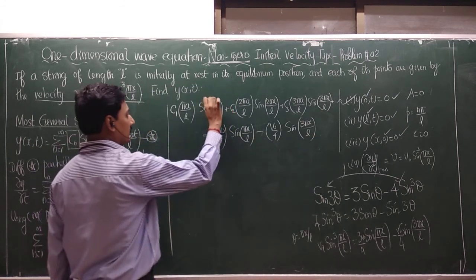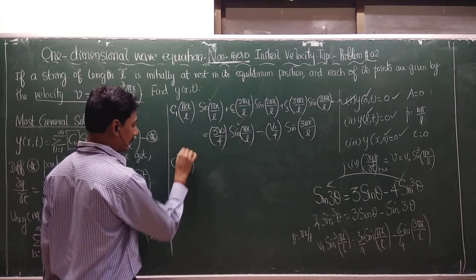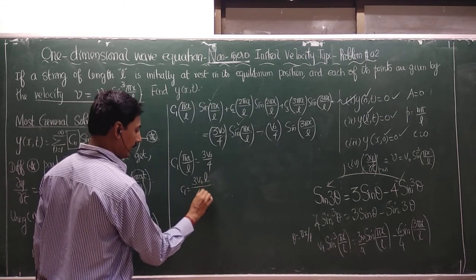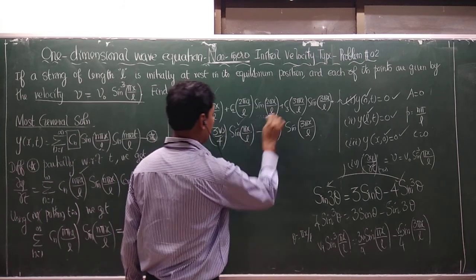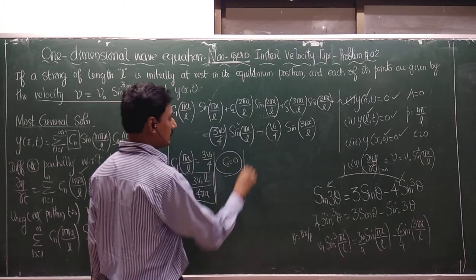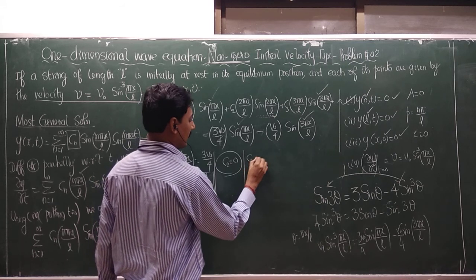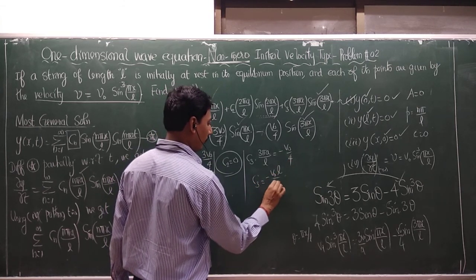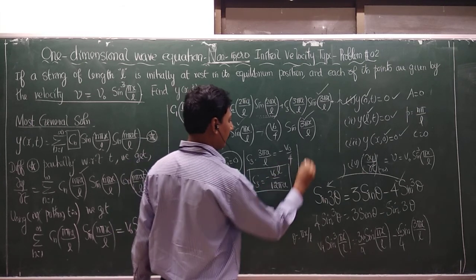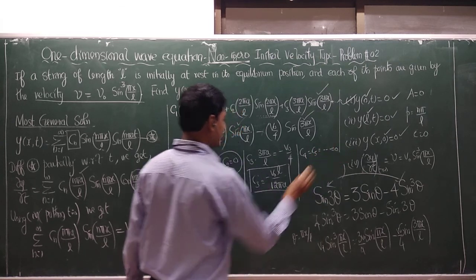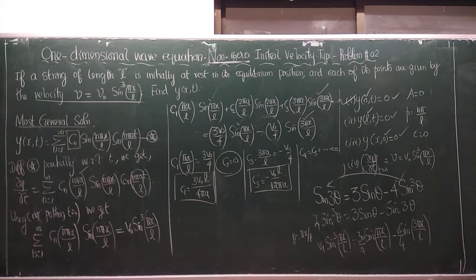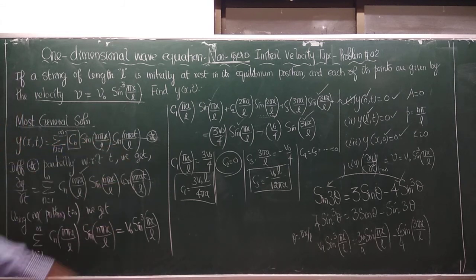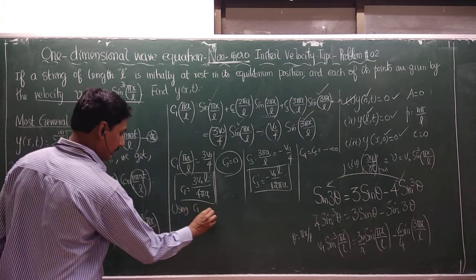Equating like coefficients: for sin(πx/L), C₁·(πa/L) = 3V₀/4, so C₁ = 3V₀L/(4πa). For sin(2πx/L), there is no matching term on the right, so C₂ = 0. For sin(3πx/L), C₃·(3πa/L) = −V₀/4, so C₃ = −V₀L/(12πa). All other coefficients C₄, C₅, ... are zero.